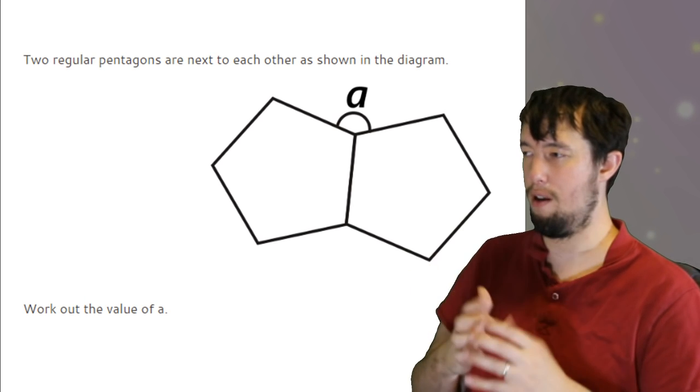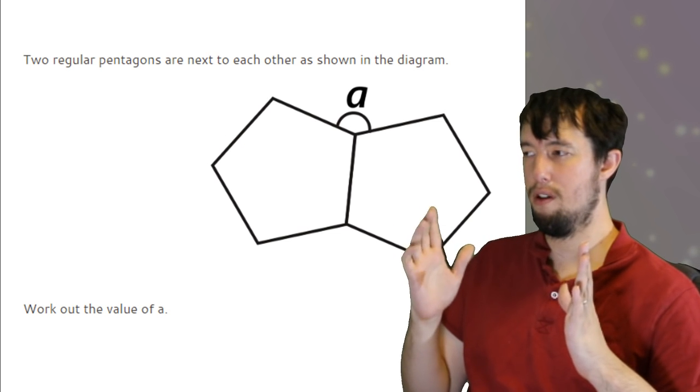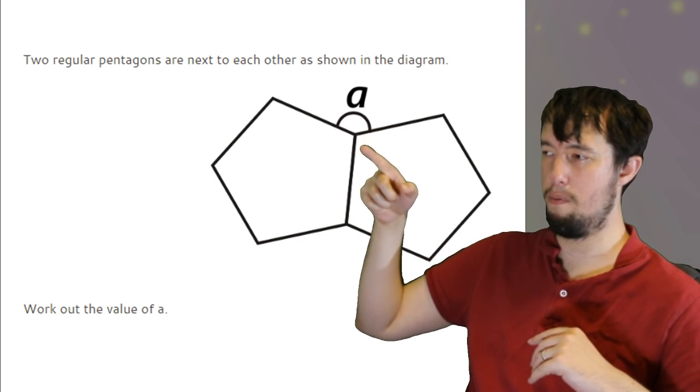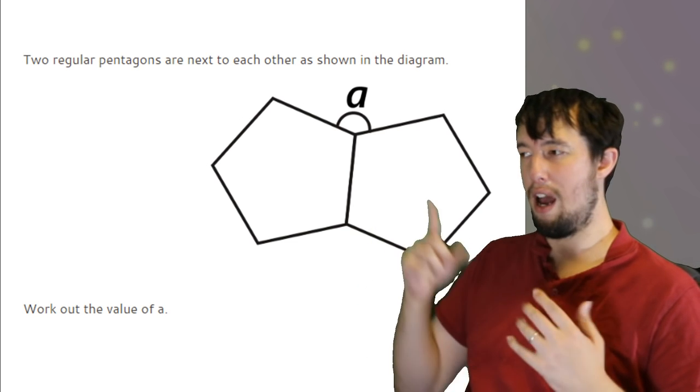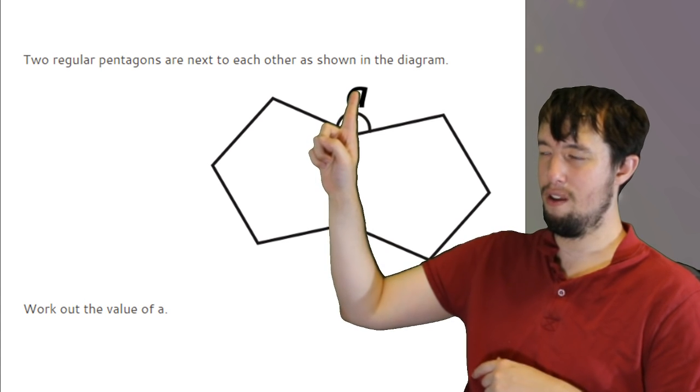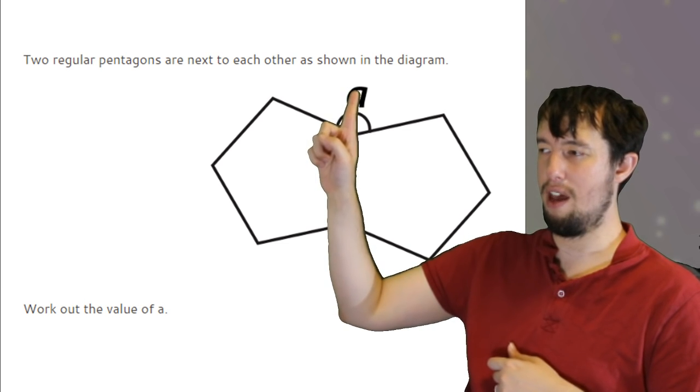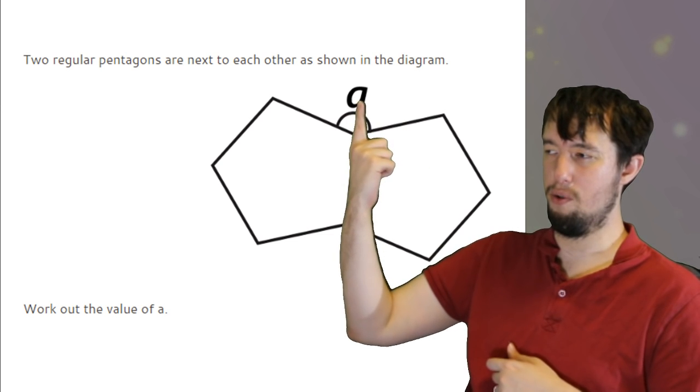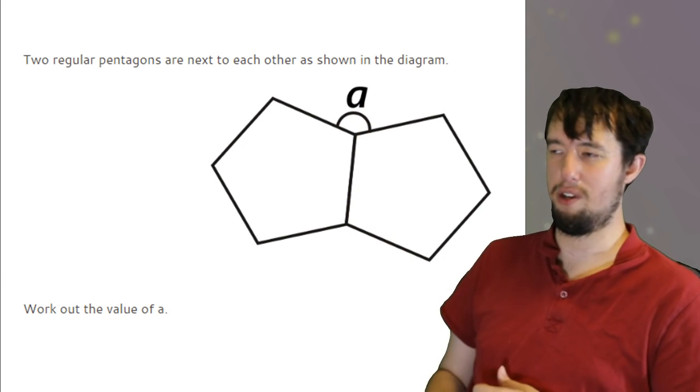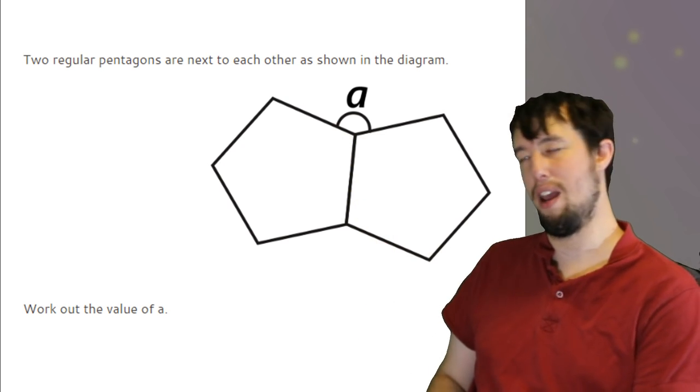You then divide it by the amount of sides and you can get each individual one if it's regular. For exterior angles, it's not that complicated. Exterior angles always add up to 360. To work out that exterior angle, you just do 360 divided by 5, divided by the amount of sides. And actually for this question, that is also the same angle on the left hand side of my finger because it's the exterior angle of the other pentagon. Then you just add them together for this question, or you can work out the interior angles and then take them away from 360.